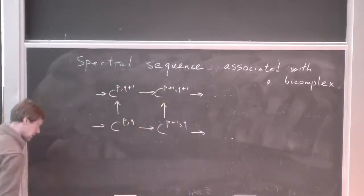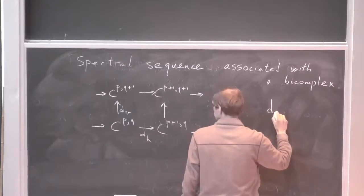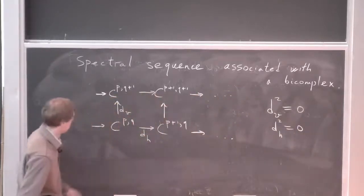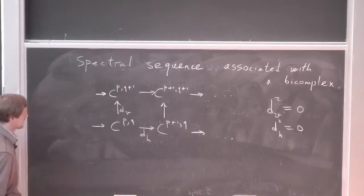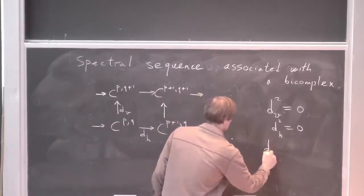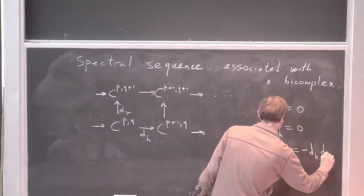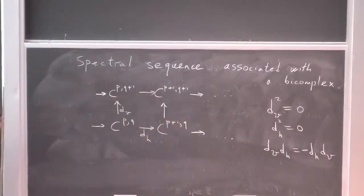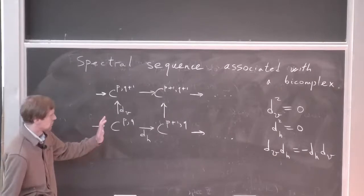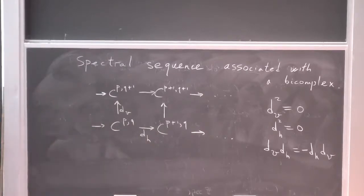There is a horizontal differential and a vertical differential; they both have to square to zero. There are two possible conventions for how the squares behave, which differ by sign. Let's assume here that they skew-commute: dV dH equals minus dH dV. One can easily pass from this convention to the one where they commute by changing signs in every other column or every other row, and we will need to do this at some point.